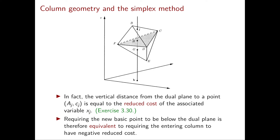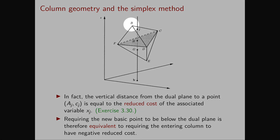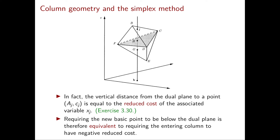The dual plane gives us information similar to that given by the reduced costs: the reduced cost is negative if and only if the new point is below the dual plane. In fact, you can show that the reduced cost of a variable xj is exactly equal to the vertical distance from the point aj,cj to the dual plane. If the new point is below the plane then the reduced cost is the negative of this distance. So requiring the new basic point to be below the dual plane is equivalent to requiring the entering column to have negative reduced cost.